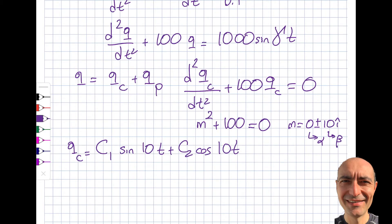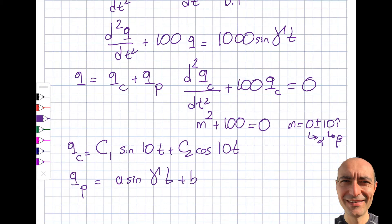Now let's find the particular solution Q_p. Since the right-hand side is a sine function, I'll use the method of undetermined coefficients — taking derivatives of sine and cosine gives the other one, so it's fairly simple. I'll try Q_p = A sin(γt) + B cos(γt). There's no overlap since the complementary solution has frequency 10 and the particular has frequency γ, so they are separate.